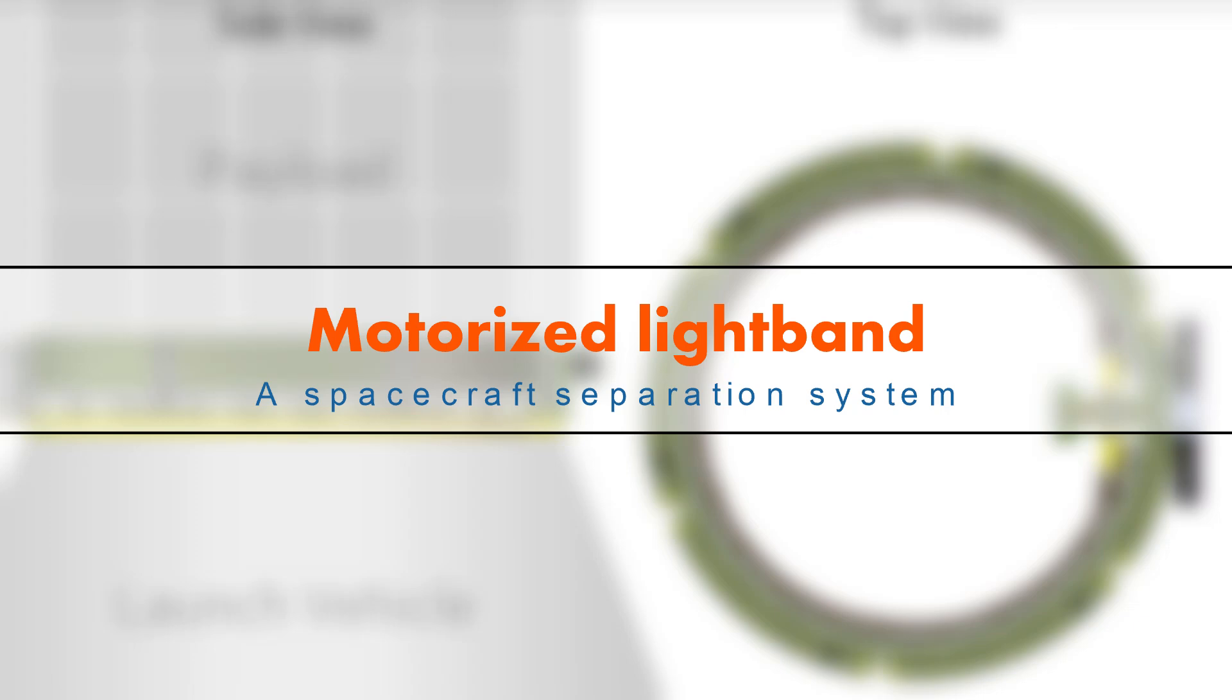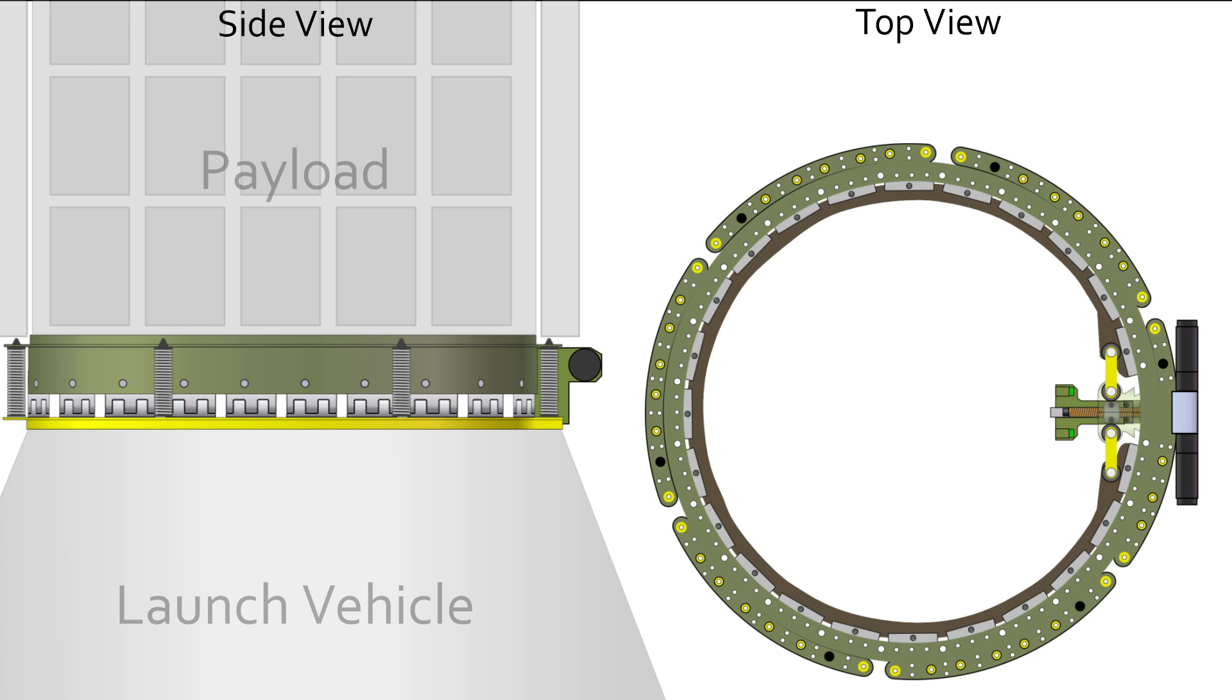The motorized light band is one of the many devices used in the space industry to separate a payload from its launch vehicle. There are eight main parts to this device: bottom frame,